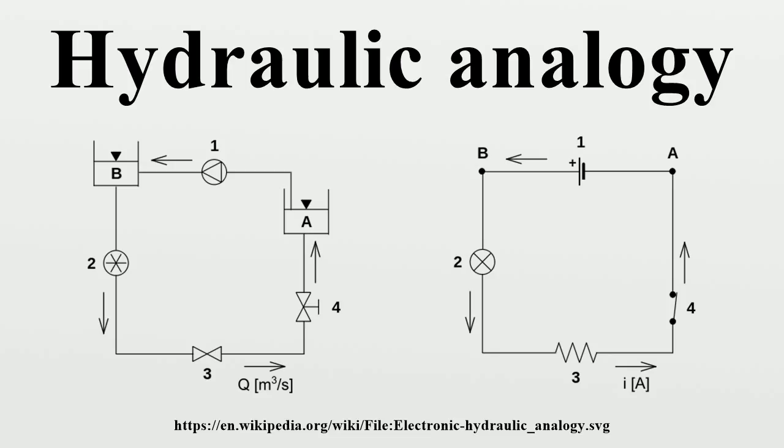Resistor: A constriction in the bore of the pipe which requires more pressure to pass the same amount of water. All pipes have some resistance to flow, just as all wires have some resistance to current. Node in Kirchhoff's junction rule - a pipe T. The net flow of water into a piping T must equal the net flow out.